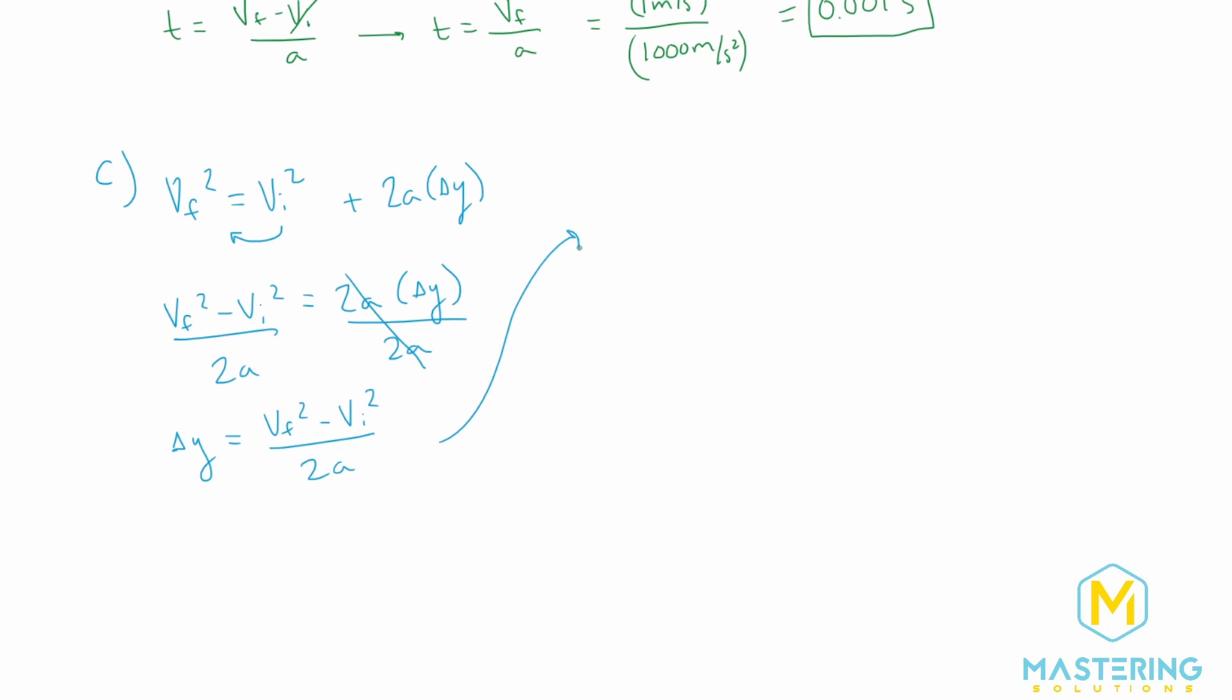When we plug in our numbers to it, we'll have delta y equals the final velocity is 0. Because if you think about it, when it's jumping up, the first half of the jump, it comes up to here and the v is 0. So we have negative v initial, which we know is 1 meter per second. That will be squared. And it will stay inside of the parentheses.